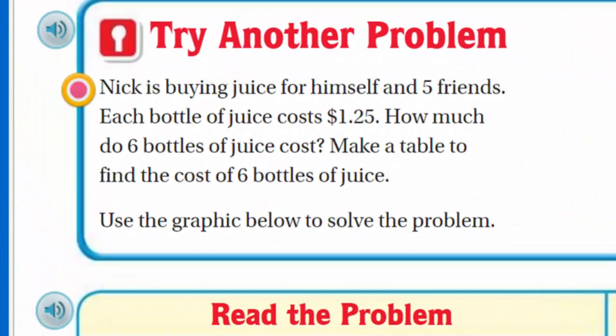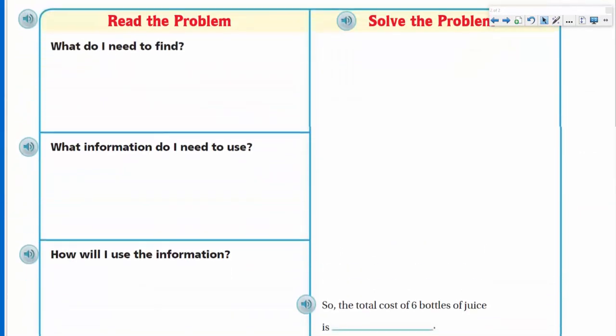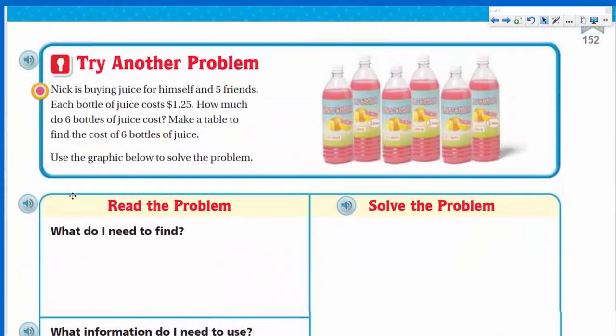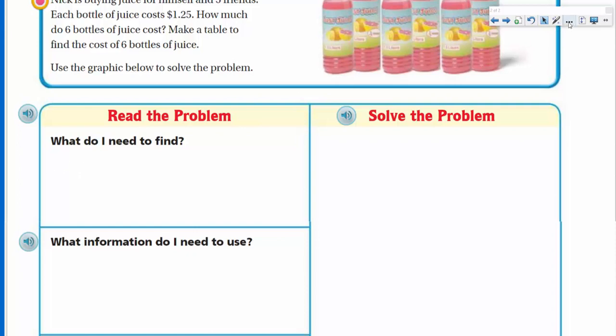Try another problem. It says now Nick is buying juice for himself and five friends. Each bottle of juice cost $1.25. What a great deal. How much do six bottles of juice cost? Make a table to find the cost of six bottles of juice. Use the graphic below to solve the problem. What did it give us down here? So we have our boxes and we also have a solve the problem section, which is where last time we made a table. So let's think about it. What do we need to find? Well, first thing is, does the problem present like a question? It says, how much do six bottles of juice cost? So it's right there. I need to know how much six bottles of juice cost. Let's write that down.